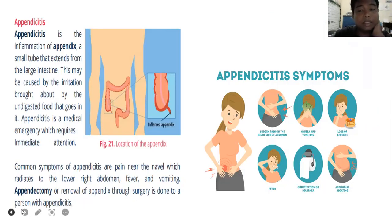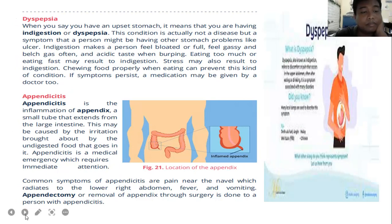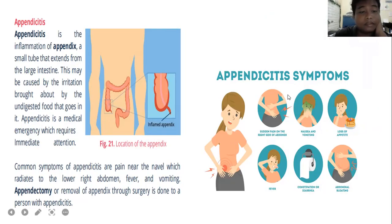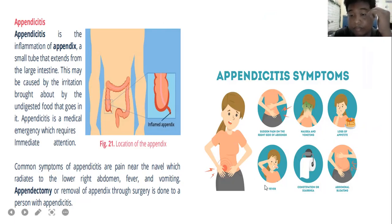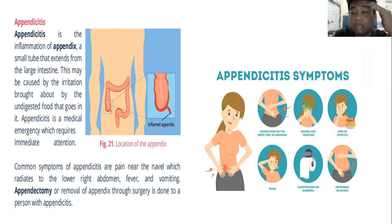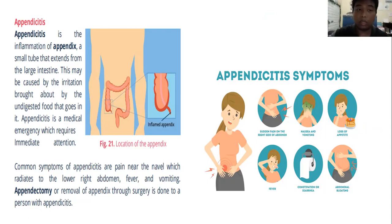Symptoms of appendicitis include sudden pain on the right side of the abdomen, vomiting, loss of appetite, fever, constipation or diarrhea, and abdominal bloating — where the belly feels very full and hard to pass stool.